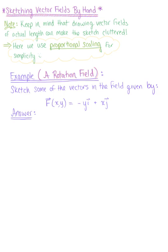To help us better understand vector fields, we need to look at some more illustrations. Here we're exploring sketching vector fields by hand. It's important to keep in mind that drawing vector fields of actual length, or by choosing points to plot at random, can make the sketch cluttered and difficult to interpret. So here we use proportional scaling for simplicity, which will make our vector field more enlightening to interpret by plotting vectors of equal magnitude.